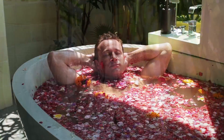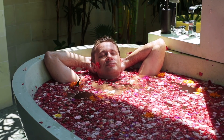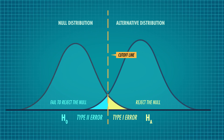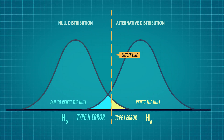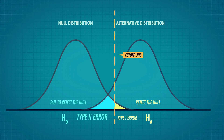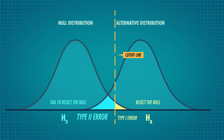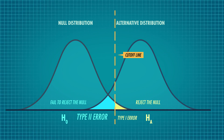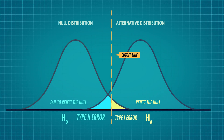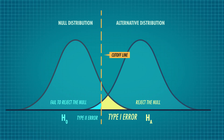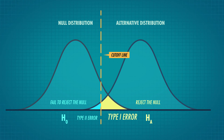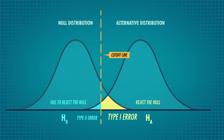Think about someone in your life who is constantly worried. They operate on the assumption that type 1 errors — thinking there will be an issue when there won't — are preferable to type 2 errors, not preparing for a problem when there really could be one. You can see on this graph that if we assume the null distribution is here and the alternative is here, then moving the cutoff threshold to the right will cause us, all other things being equal, to have fewer type 1 errors but more type 2 errors, since less of the null distribution is in the reject region and more of the alternative distribution is in the fail-to-reject region. And the opposite happens if we move the cutoff threshold to the left: we'll have more false positives but fewer false negatives.